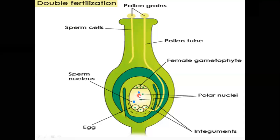The other male gamete — the second male gamete — moves towards the two polar nuclei and fuses with them to produce a triploid primary endosperm nucleus, abbreviated as PEN.